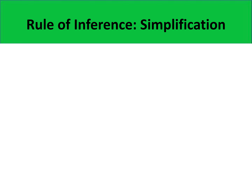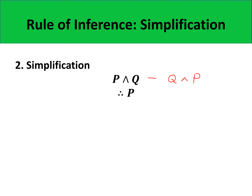The next rule of inference is simplification. Its form is P and Q, therefore P. Alternatively, we can use the commutativity rule of replacement to rewrite P and Q as Q and P — so this is also simplification. Since this is known to be valid, its propositional form — P and Q implies P — must be a tautology.